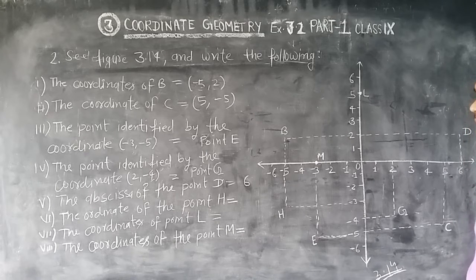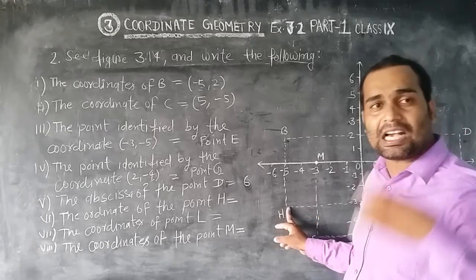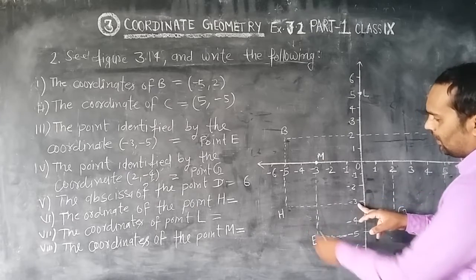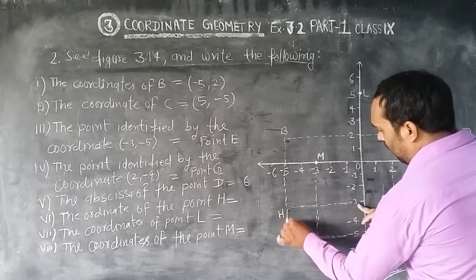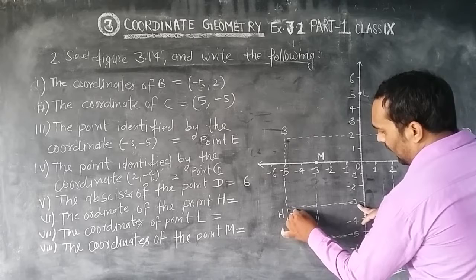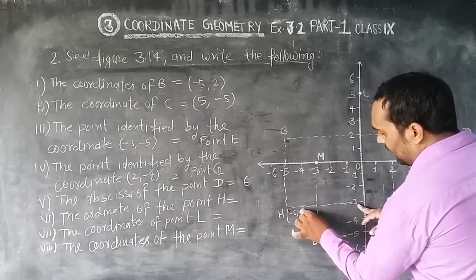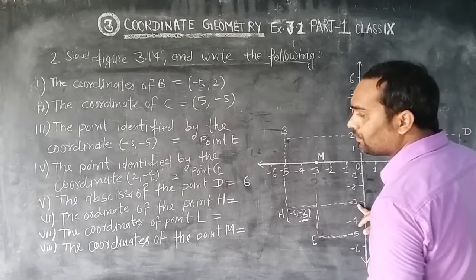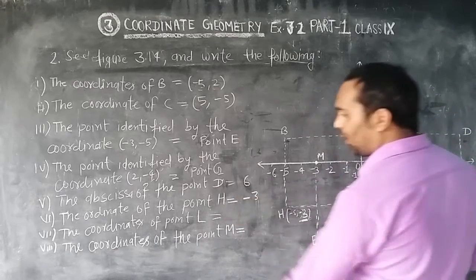Sixth: the ordinate of point H. Ordinate means the y-value. Looking at where point H's line touches the y-axis — it touches at minus 3. So the ordinate of point H is minus 3.